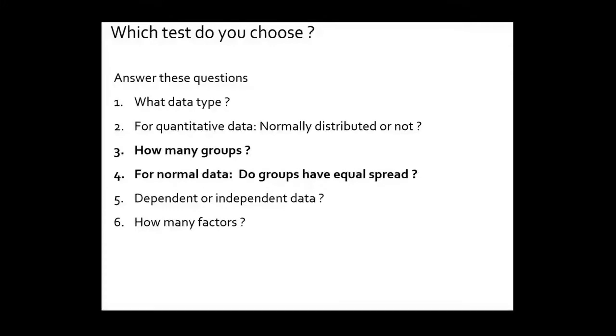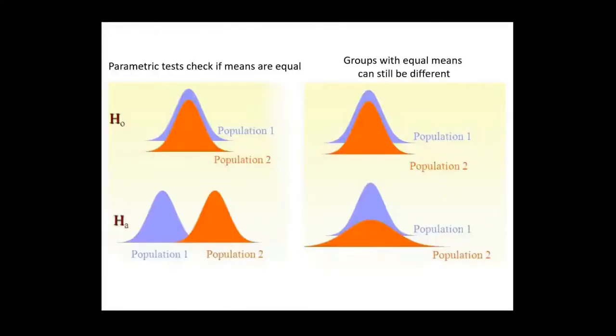The fourth question is a bit harder to explain. When you have normally distributed data, the third data type, you have checked it and it is normally distributed. You also have to check this: do your groups have the same spread? I will show you why.